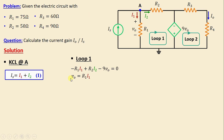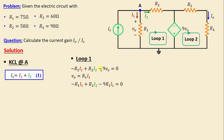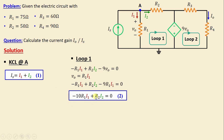Replacing Vo with R1·I1 in the Loop 1 equation, we obtain: −R1·I1 + R2·I2 − 9·R1·I1 = 0. Simplifying, this gives: −10·R1·I1 + R2·I2 = 0. We'll call this Equation 2.